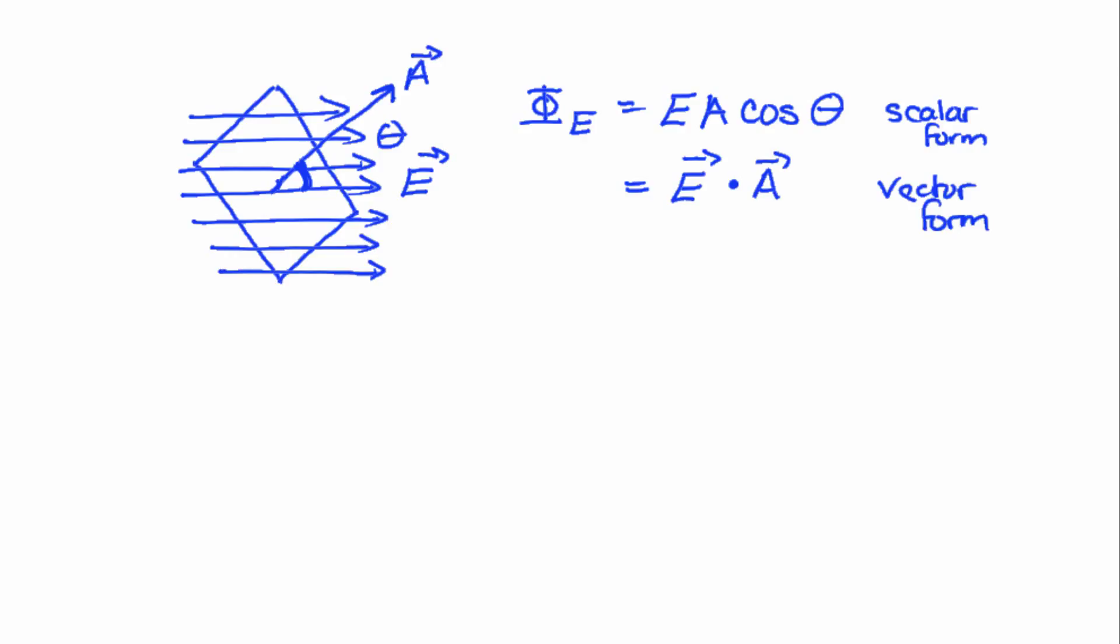So now a simple example using the diagram I have above. Let's put some numbers to the diagram we have above. So imagine this electric field's magnitude is 100 newtons per coulomb. The length of this surface is 40 centimeters, and the width of this surface is 30 centimeters.